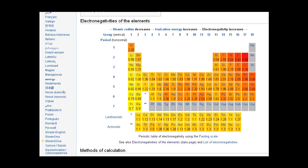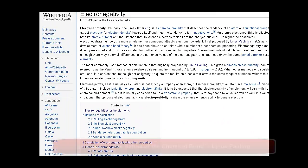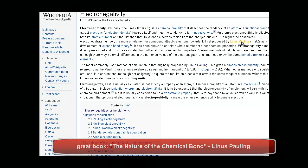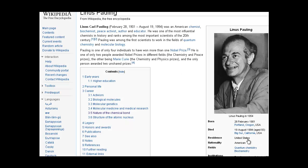Going back to electronegativity. Linus Pauling won the Nobel Prize in 1954. He also developed the electronegativity table and gave a lot of insight into how these chemical bonds work. So, check it out.